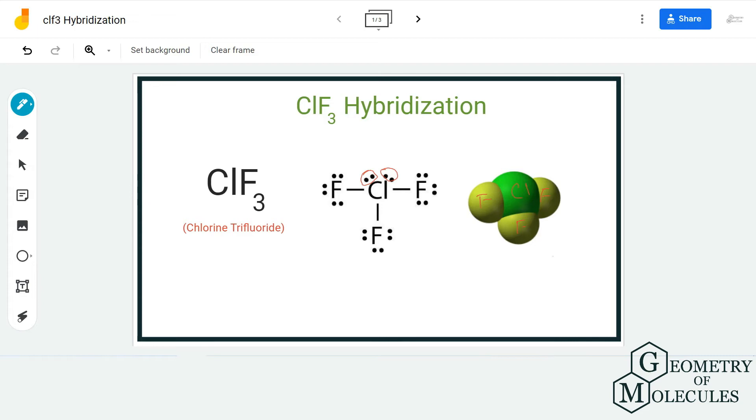For finding the steric number, you basically need to know the total number of electron regions around the central atom. Here, the electron regions for the chlorine atom will be five because there are three bonds, that is three bonding pairs, and there are two lone pairs of electrons.